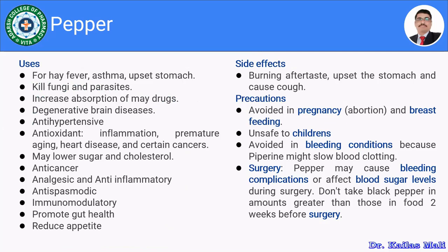As used worldwide, we are using black pepper as a spice. It is used in hay fever, asthma, or stomach upset. Furthermore, it has the ability to kill fungi and acts as an anti-fungal. If given orally, it is used to kill certain parasites. It contains mainly piperine, which has the ability to increase absorption of minerals, so it is used as a bioavailability enhancer in formulations.